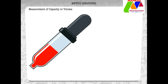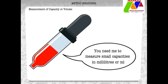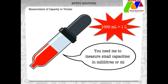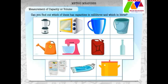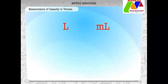And now, let us look at the measurements of capacity or volume. You need me to measure small capacities in milliliters or ml. You need me to measure large capacities in liters or l. Can you find out which of these has capacities in milliliters and which in liters? When we add capacities, we use the placeholders liters and milliliters.